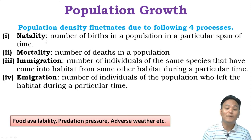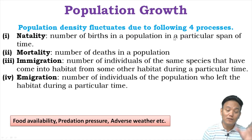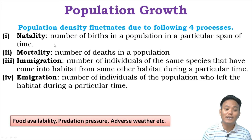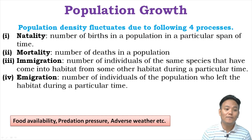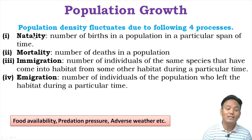Natality basically means birth rate — how many individuals are born in a population in a particular span of time. Mortality is the opposite of natality. Mortality means the number of deaths in a population in a particular span of time, so basically mortality means death rate. Mortality and natality play an important role in changes in population density.